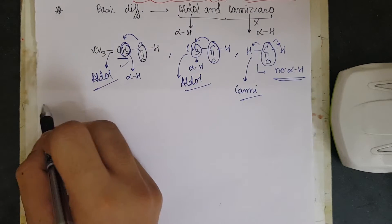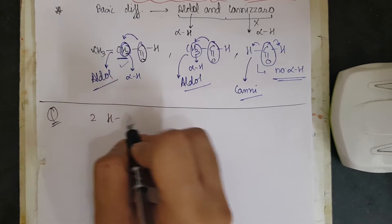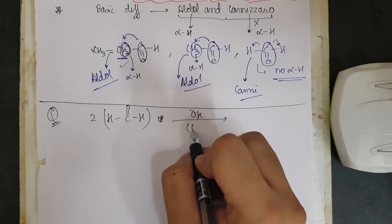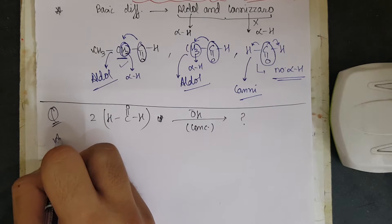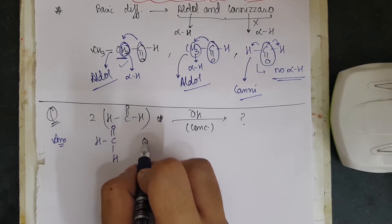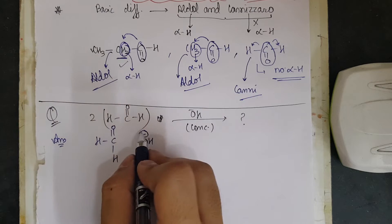Let me do a question to clarify the reaction mechanism. If I take two moles of HCHO plus concentrated OH⁻, what is the product? To proceed: first write HCHO and OH⁻. In aldol, OH⁻ used to remove the most acidic alpha hydrogen, but here we do not have any alpha hydrogen. So the only thing OH⁻ can do is attack the carbonyl group itself.